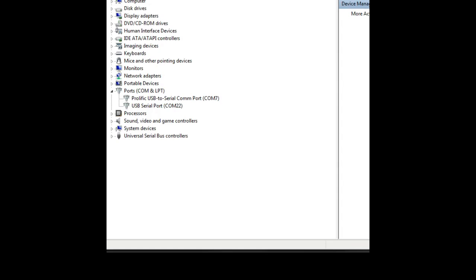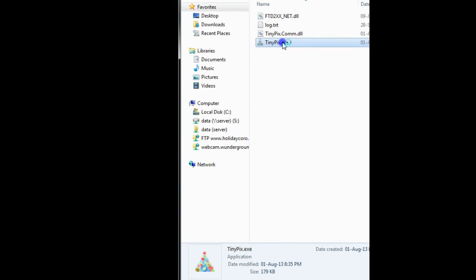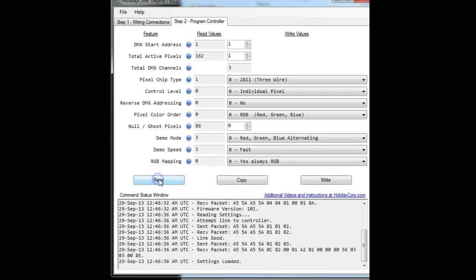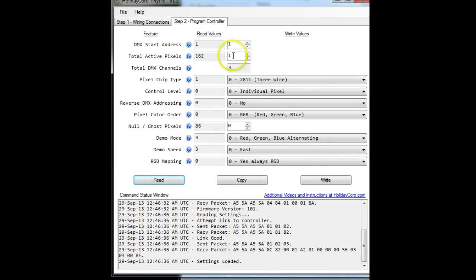In this particular example, we will be using Holiday Coro's TinyPix pixel controller. We're going to first show you that we have COM22 set up for the programmer. We're going to load up the TinyPix programming software and go to programming controller. I'm going to do a read, it's going to pull back my settings. We're just going to go ahead and set this to 170 pixels, that's the maximum that can be output.